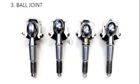Komponen yang ketiga adalah ball joint. Bentuk ball joint seperti pada gambar. Fungsinya adalah untuk menerima beban kendaraan, baik secara vertikal maupun lateral, dan juga sebagai sumbu putaran pada saat kendaraan berbelok.